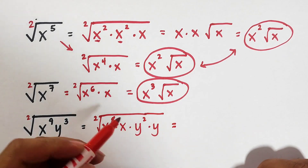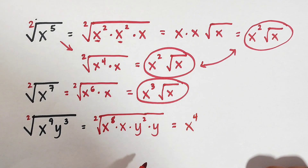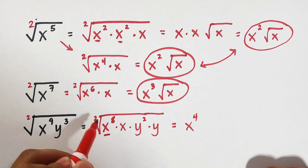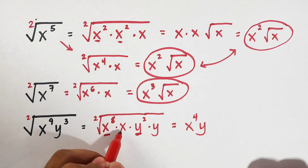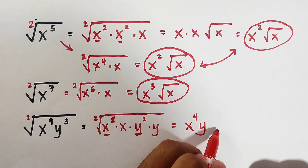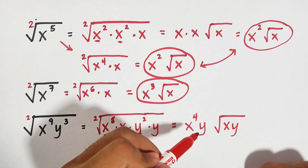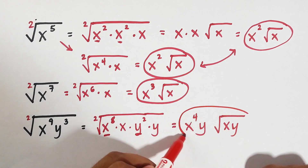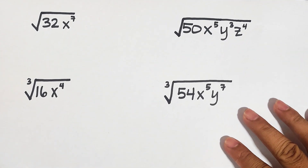Let's get the square roots: divide 8 by 2, which is 4, so we have x raised to the fourth power. For the y variable, 2 divided by 2 is 1, that is simply y. Then copy the remaining non-perfect-square variables x and y inside the radical. This is the answer: x raised to the fourth power times y times the square root of xy.